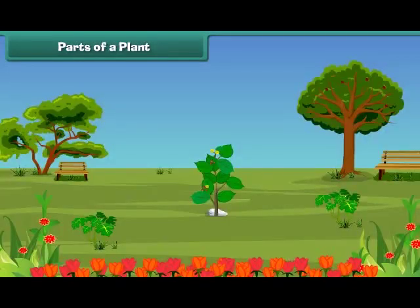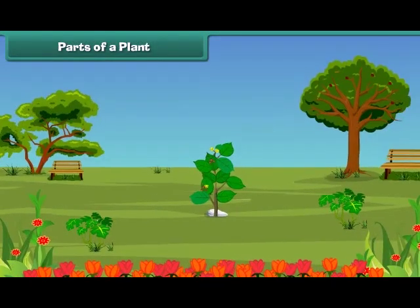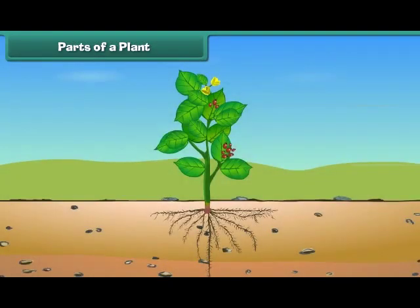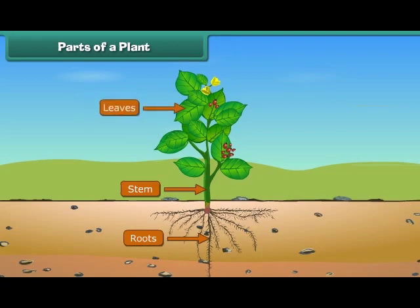Friends, let us discuss the various parts of a plant. The main parts of a plant are roots, stem, leaves, flowers, and fruits. Let us know them one by one in more detail.